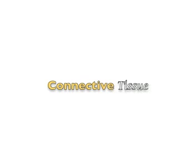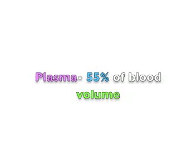Blood is a type of connective tissue with cells suspended in plasma. Plasma is about 55% of the blood volume. It consists of water, ions, various plasma proteins, nutrients, waste products, respiratory gases, and hormones, while the cellular elements include red and white blood cells and platelets.